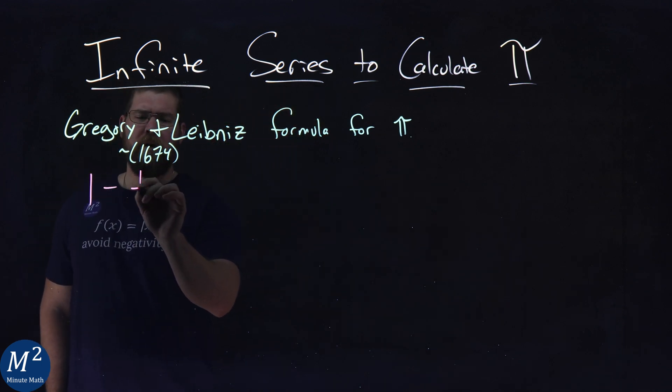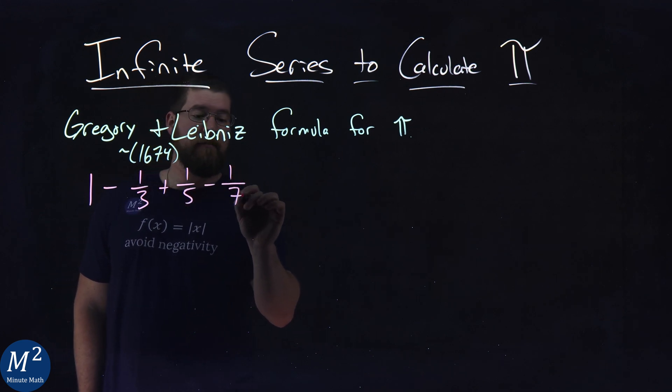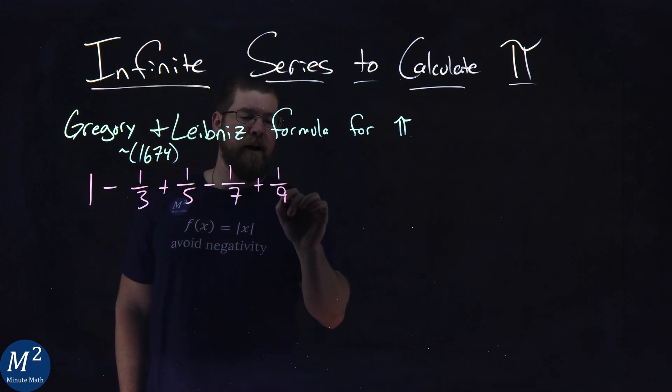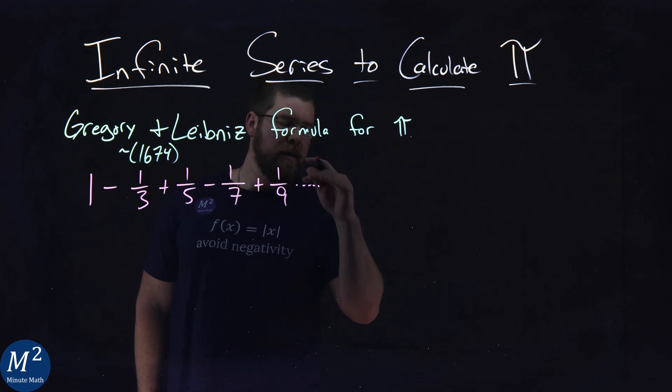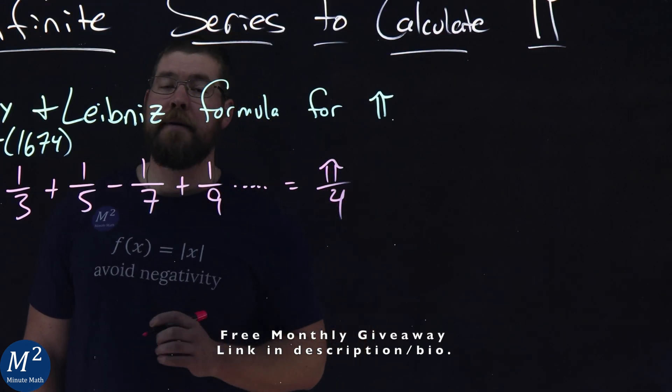1 minus 1/3 plus 1/5 minus 1/7 plus 1/9 dot dot dot. Repeat that forever, and you get pi over 4.